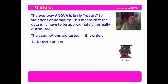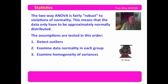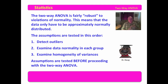The assumptions that you're going to examine are tested in this order: first, you detect outliers; then you examine data normality in each group; and then you examine homogeneity of variances. Assumptions are tested before proceeding with a two-way ANOVA. So if you're doing this research for your dissertation or conducting research, the first thing you want to do is start assessing the assumptions, which we're going to examine in later videos as to how you would actually run that in SPSS.